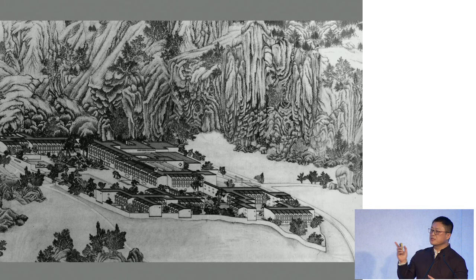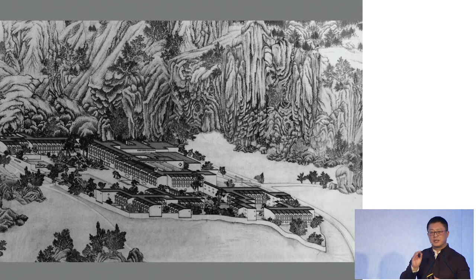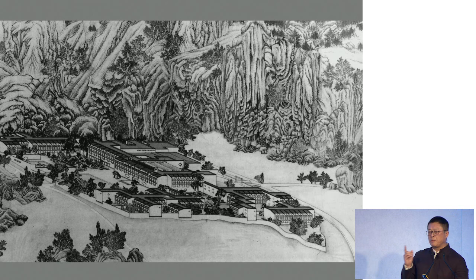Pei designed the Fragrant Hill Hotel in Beijing and showed it to the government. The government was very disappointed at first because they were expecting him to design something modern and Chinese, but Pei designed something Chinese but not so modern. Pei won the Pritzker Prize after this, because the director of the Pritzker Awards was Philip Johnson, who was a post-modernist. Johnson said, 'Welcome, Mr. Pei — you are now a post-modernist,' and so he got the Pritzker.